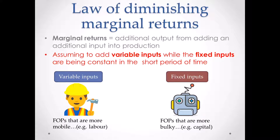In a short period of time, the reason why you can only add variable inputs is because if you are trying to add more fixed inputs, you need more time. The perfect example is going to be a factory — you cannot just buy a factory even if you want to. It takes time to look for a good factory, to negotiate, to sign a contract, and to renovate it.